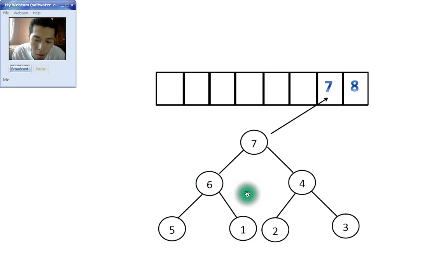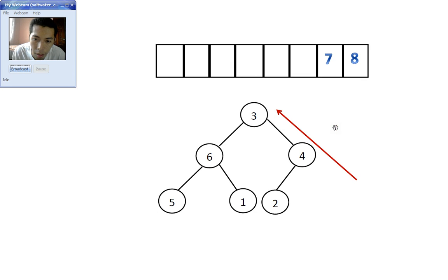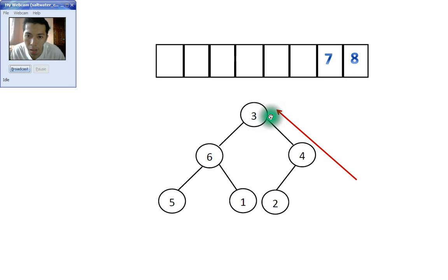Now we evaluate whether the right side is okay. 4 is greater than 2 and 3, so that's fine. 6 is greater than 5 and 1. So 7 is greater than all of these nodes, meaning 7 will now be placed at the next stack position and removed. Then 3 will move to the position of 7 to replace it.